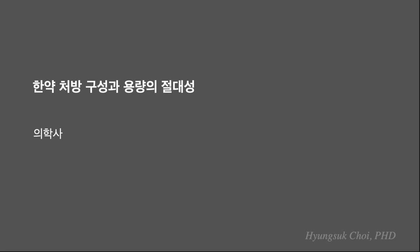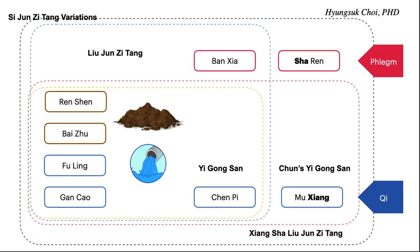Herbs and formulas are really fun. Once you get to know them, you can apply them in many conditions for your family, neighbors, and yourself. The purpose of this class is for you to like formulas and herbs. Surprisingly, compared to Chinese and Korean acupuncturists, American-trained acupuncturists do not use herbs, even after finishing all their education. What does that mean? The education system is wrong.